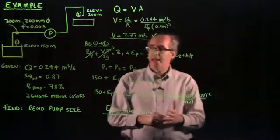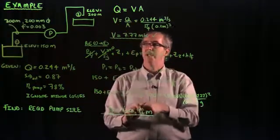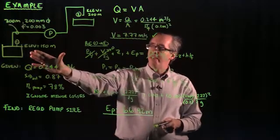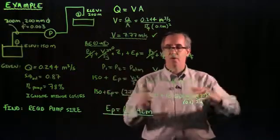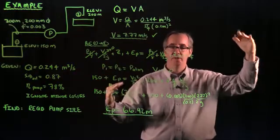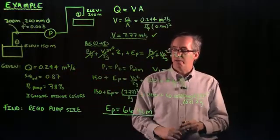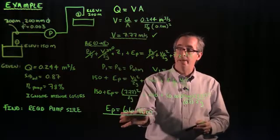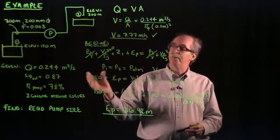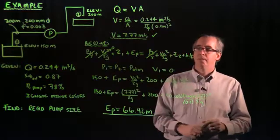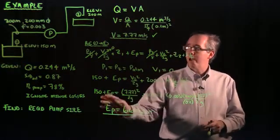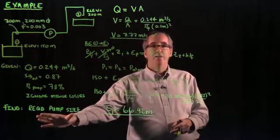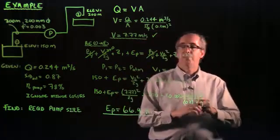So what that's telling us is this. Remember, the pump head is more than just the elevation change. The elevation change is going from 150 to 200 meters. There's 50 meters of elevation that the pump has to overcome. But there's also another 16.9 meters of friction losses that the pump has to overcome as well. Now, we've got the pump head, but what we're actually looking for in this problem is to size the pump. So we have one more step with this.